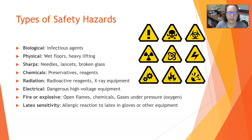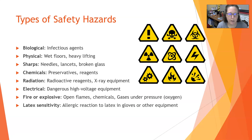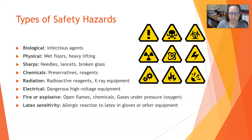The different types of safety hazards include: biological infectious agents, physical hazards like wet floors and heavy lifting, and sharps such as needles, lancets, and broken glass — all covered in this video. The next video will cover chemicals like preservatives and reagents, radiation including radioactive reagents and X-ray equipment, electrical high-voltage equipment, fire or explosive hazards, and gases under pressure such as oxygen tanks.